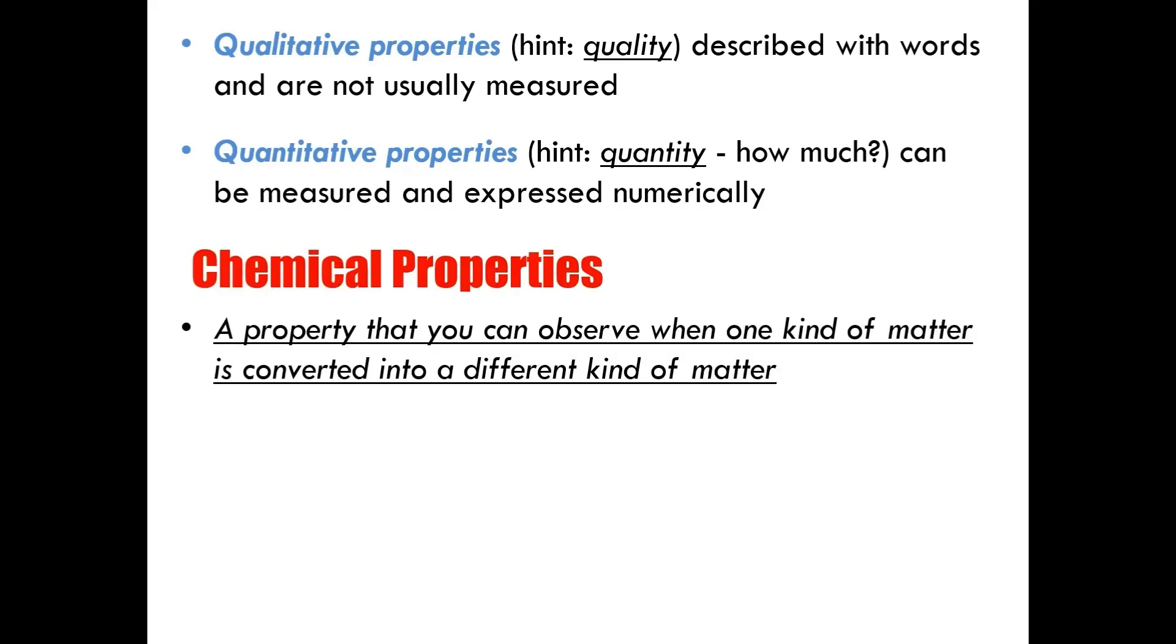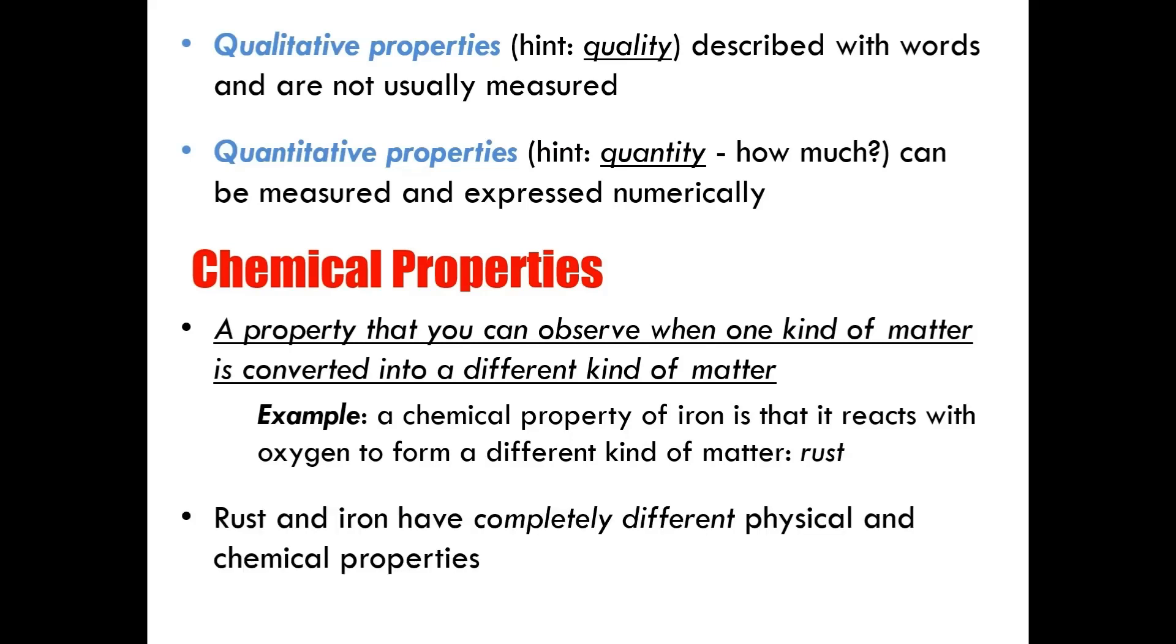And so, that brings us to chemical properties. A chemical property can be observed when one kind of matter is converted into a different kind of matter. So, for example, a chemical property of iron is that it reacts with oxygen to form a different kind of matter. That matter is called rust. Rust and iron have completely different physical and chemical properties, and this is because they are completely different materials.